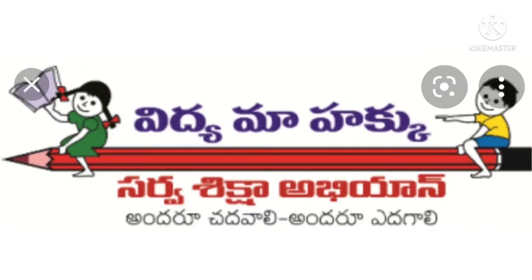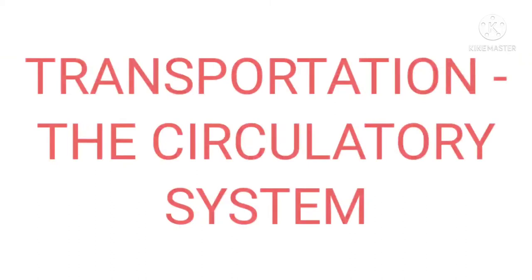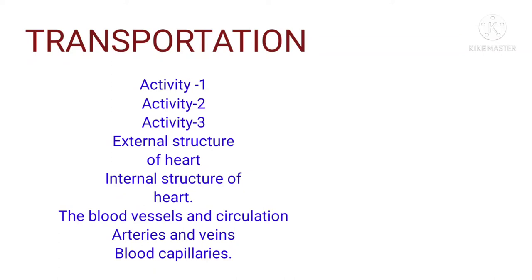Good morning children. In the last session we studied the third unit: transportation, which is one of the circulatory system topics. We completed what is transportation, what is the circulatory system, activity one on pulse rate, activity two on making your own stethoscope, activity three on the external and internal structure of the heart, blood vessels, and circulation.